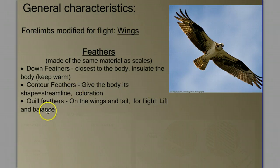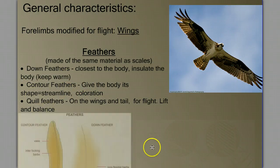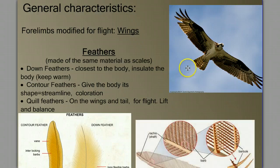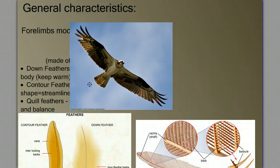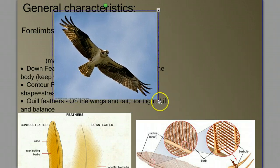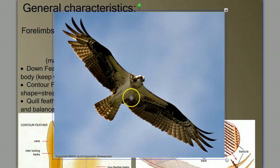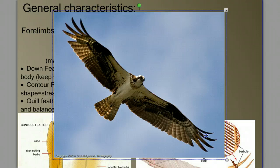We have three different types of feathers. We have down feathers that are closest to the body and help insulate the body. We have contour feathers, which give the body its streamlined shape and coloration — those are the ones along the head and the body. And then the quill feathers, the ones involved in the wings and the tail that are directly involved in flight.